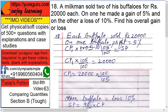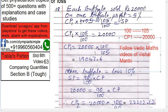We can solve this now: 20,000 into 100 upon 105, which becomes 2,000,000 upon 105. This division is easy if you follow Vedic mathematics tricks — follow my videos for that. The answer you get is 19,047.6. So this is the cost price of the first buffalo. I would suggest following Vedic maths to do it very fast compared to normal maths.